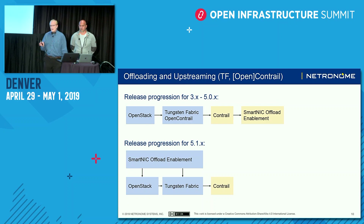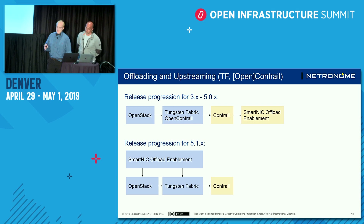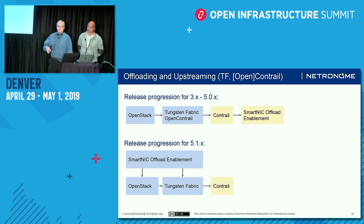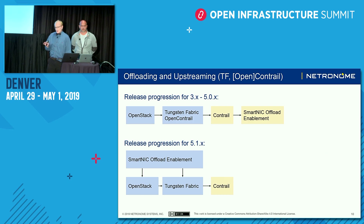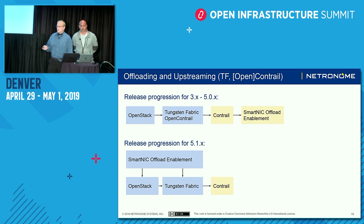This slide shows the release process. For releases from version three to five, there was a trailing release cycle — Tungsten Fabric and OpenStack released first, and then the offloads were added later. But from 5.1 onward, offloads — both direct and indirect — are baked into master, and you should be able to get access to them earlier for testing. With Tungsten Fabric you can already start testing them, and supported releases in Contrail will appear a lot earlier.